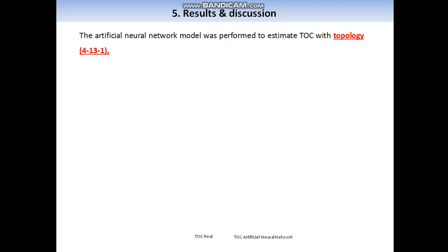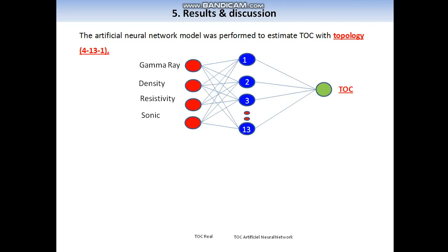For results, the artificial neural network model was performed to estimate TOC with topology 4-13-1. In the input layer, composed of 4 neurons: gamma ray, density, resistivity, and sonic. In the hidden layer, composed of 13 neurons. In the output layer, composed with only one neuron: TOC is the target.